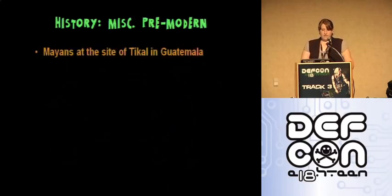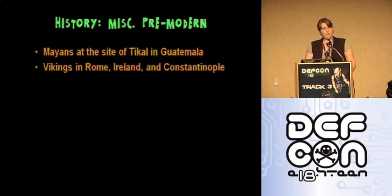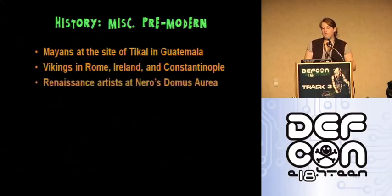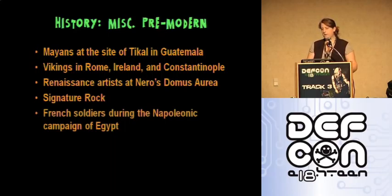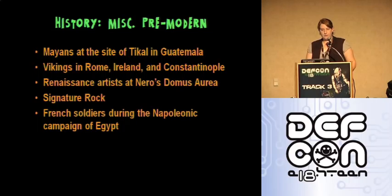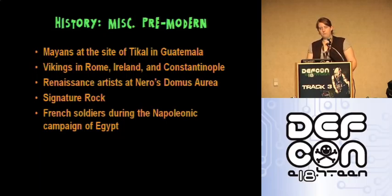There are many other lesser-known instances of pre-modern graffiti, including carvings on the walls of royal and/or wealthy homes of Mayans at the site of Tikal in Guatemala. The Vikings left markings and etched their names into ruins in Rome, New Grange Mound in Ireland, and one Viking, Halvdan, put his name on ruins on a banister in Constantinople — I can't pronounce it, I'm from America, we don't care about anything outside of America, really.